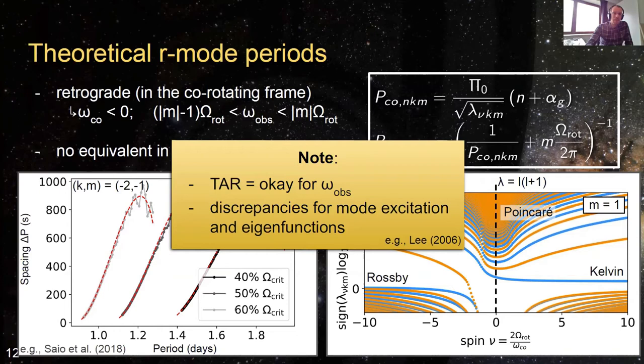I will use the traditional approximation of rotation throughout this work, as that is what we have available. This is appropriate for the observed pulsation frequencies and periods. However, I should note it is not appropriate if you want to study pulsation mode excitation or the eigenfunctions, where discrepancies with more complex models exist.